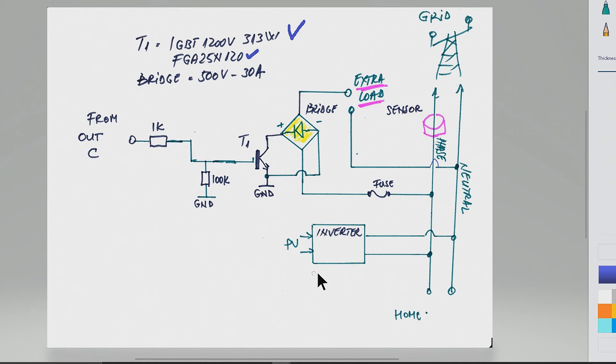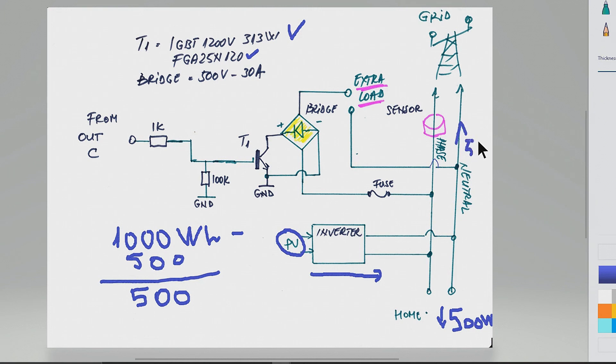To understand how these things are working - let's say we have an inverter and the panels. This inverter is, let me call it stupid, so it's delivering 1000 watts. The house is consuming only 500 watts. So we have, in this case, power going to the grid over here.